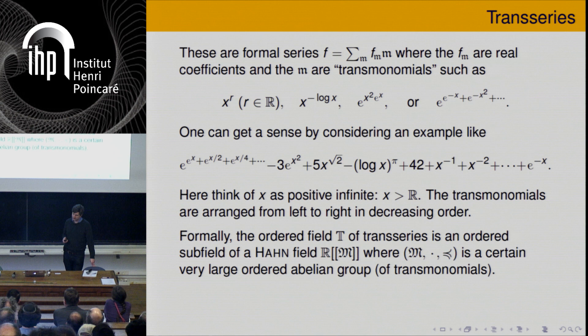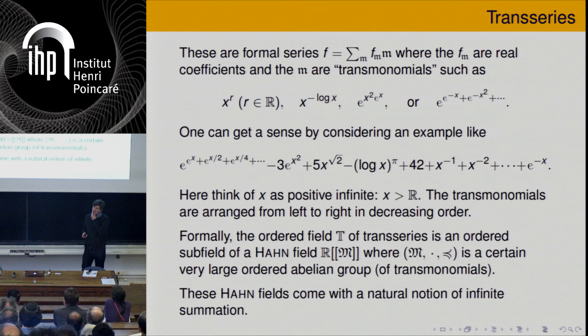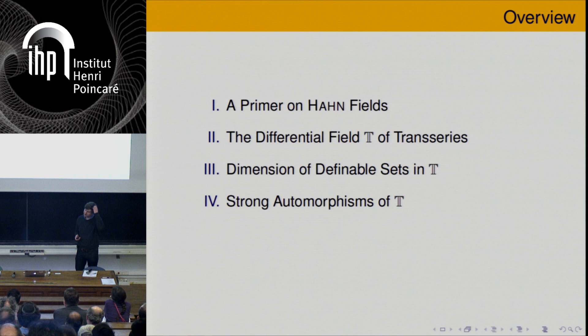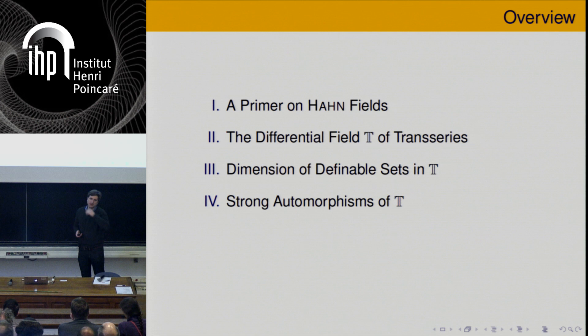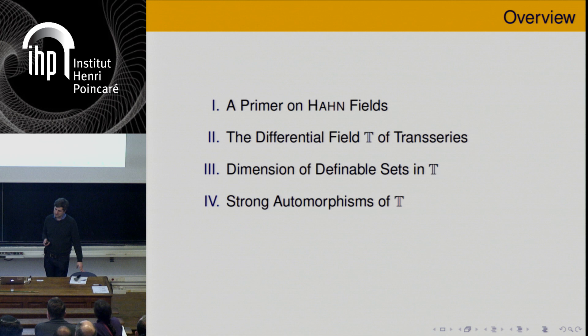I'll talk a little bit about Hahn fields, because they come with a notion of infinite summation, which is usually not stressed that much in valuation theory, but which is quite important for us. Here's the plan: I'll talk about Hahn fields, then about T, and then, as promised, about dimension and automorphisms of T.